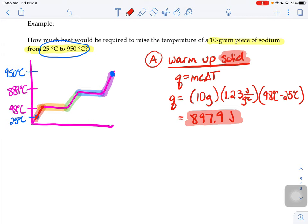Next up, part B. Part B is where we're melting. We need to make it across that horizontal line right here. So if we're melting, we can't use MC delta T because there is no delta T. It's staying 98 degrees that whole time. The mass of my object isn't going to change due to law of conservation of matter. If I start with 10 grams, I'm going to end with 10 grams.